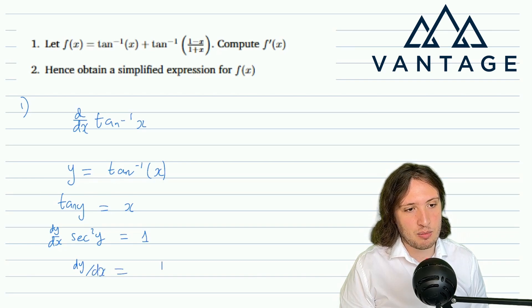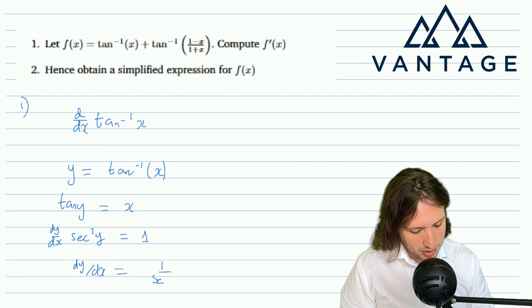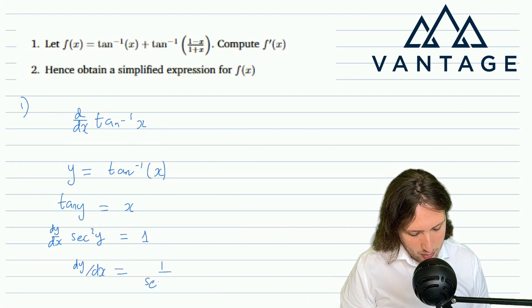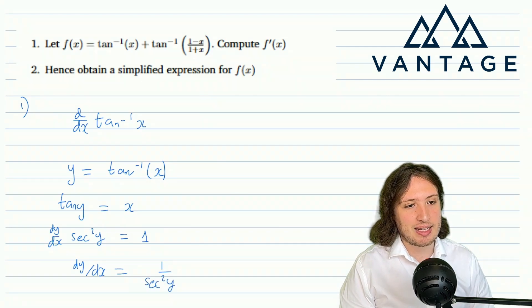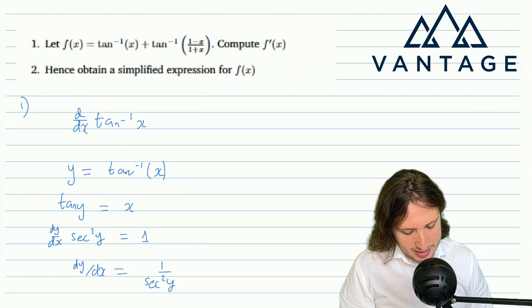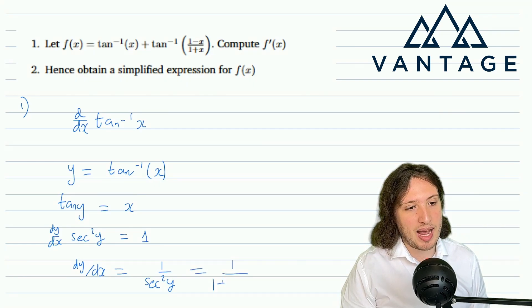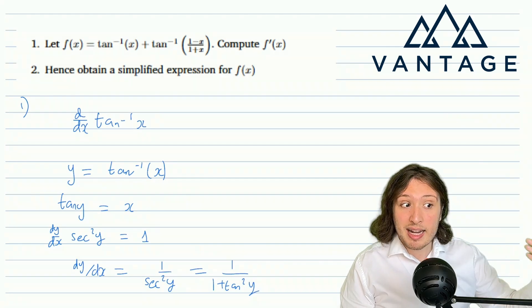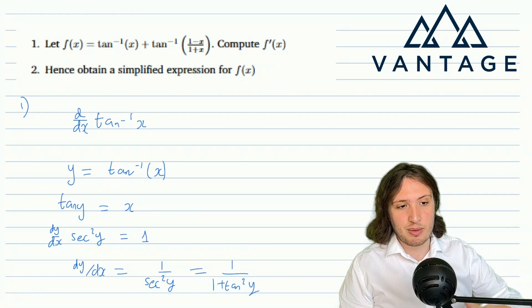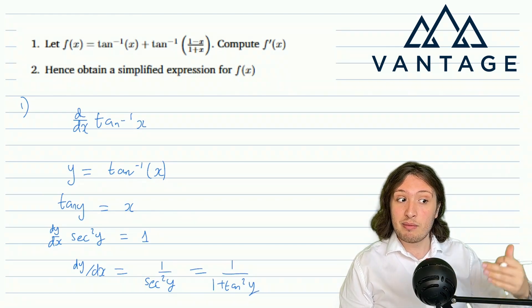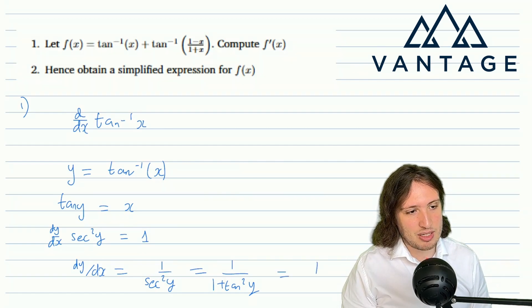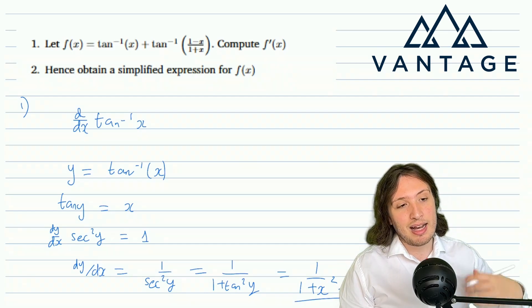The derivative of x is even easier, it's just one. So that tells me that dy/dx, the derivative of arctan, is 1/sec²(y). Now although this equation is true, we don't really want y involved, I want everything in terms of x. Well remember we know that tan(y) is x, and moreover we know that sec² is 1 + tan². So this Pythagorean identity 1 + tan² = sec² is really important when we want to convert between tan and sec. That is then precisely 1/(1+x²).